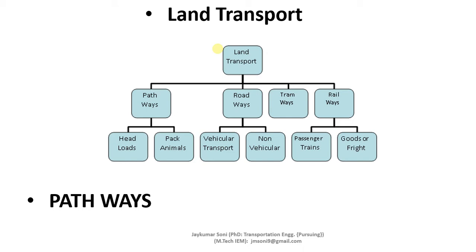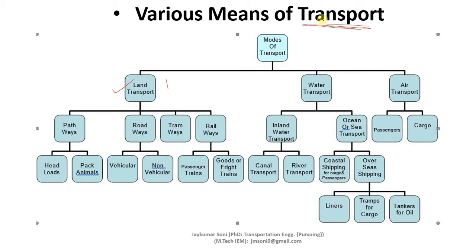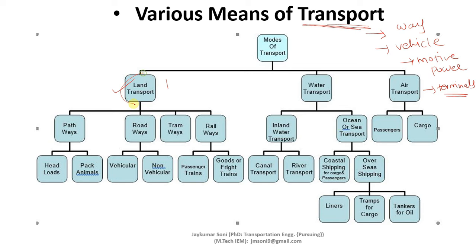Land transport is divided into 4 categories. Before going into detail, note that this general classification of transport is done on the basis of the way, type of vehicle, type of motive power, and terminals. So the classification you are observing is done on the basis of way, vehicle, motive power, and terminals.